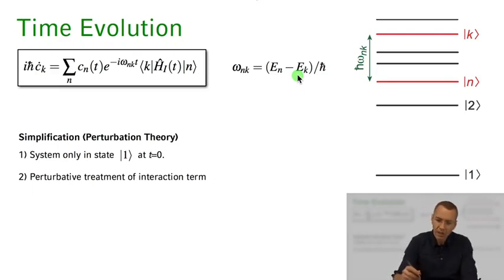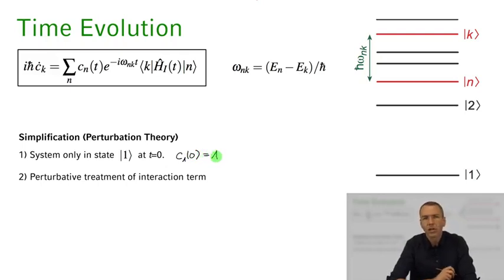First of all let's assume that at time t equals 0 the system is basically only in the ground state. So at time t equals 0 the probability of being in state 1 in the ground state is 1, meaning that the state amplitude vector also has to be 1.